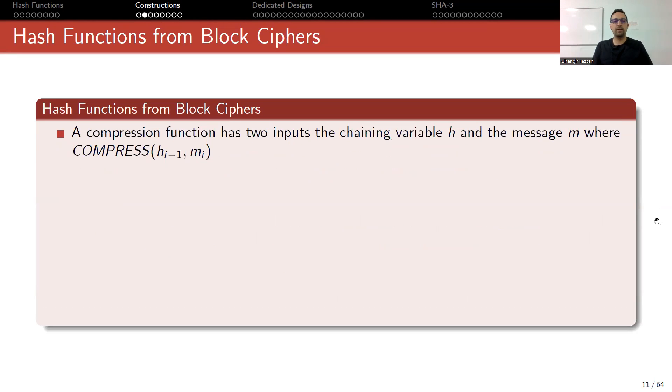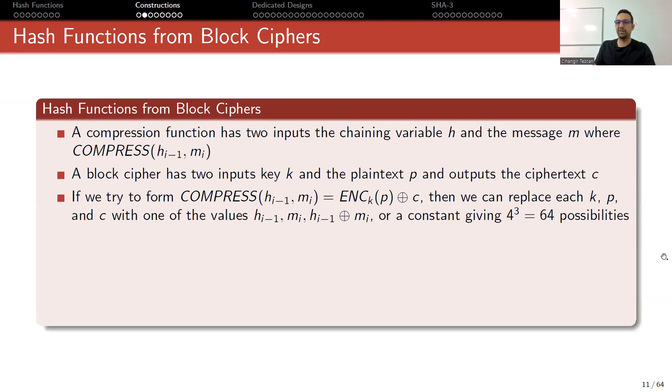Let's look at how this works. A compression function has two inputs: the chaining variable h and the message m, where the compression function takes the previous chaining value and the current message block. A block cipher has two inputs, key and the plaintext, and outputs the ciphertext c. We can put the key and the plaintext block here and provide the next chaining value h, which will be the ciphertext.